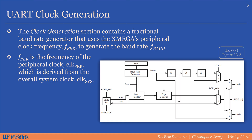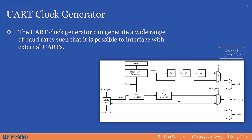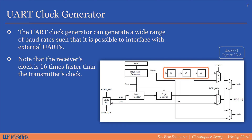The clock generation section contains a fractional baud rate generator that uses the peripheral clock to generate the baud rate. FPER is the frequency of the peripheral clock, which is derived from the overall system clock. Shown here is a block diagram of the UART's clock generation hardware, responsible for generating a wide range of baud rates such that it's possible to interface with external UARTs. Note that the receiver's clock is 16 times faster than the transmitter's clock, as the transmitter's clock is passed through a series of pre-scalers, resulting in a 16 times reduction.